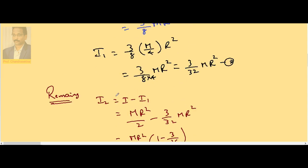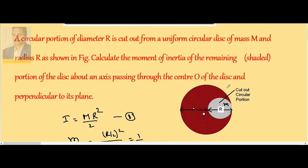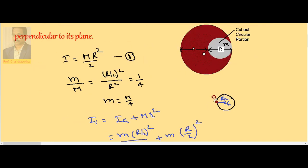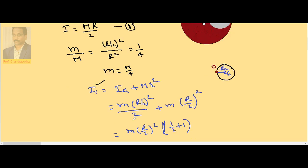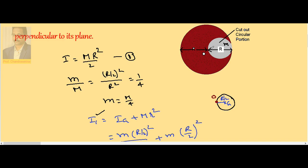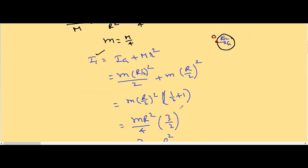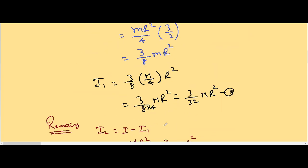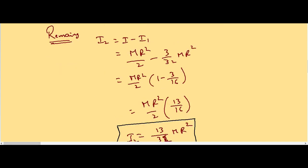To summarize: first calculate the moment of inertia of the full disk. Then calculate the moment of inertia of the removed part about the same axis O — the axis is the same in both cases. For the removed part, since the axis does not pass through its center, apply the parallel axis theorem: I_G + mR², where small m is the mass of the removed portion and R/2 is the distance between the center of the removed portion and O. Then I minus I1 gives the moment of inertia of the remaining portion.